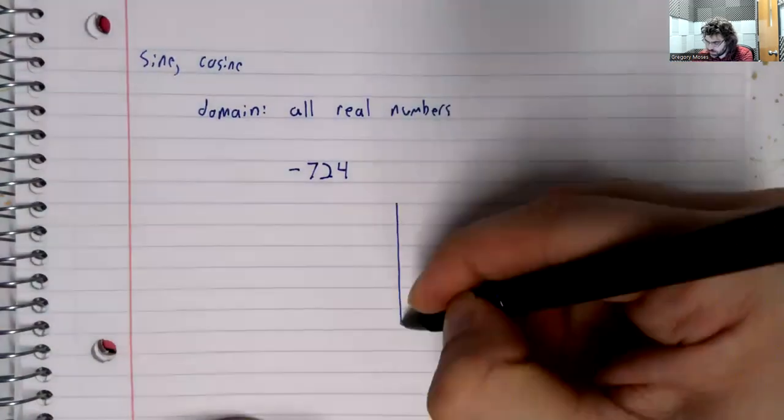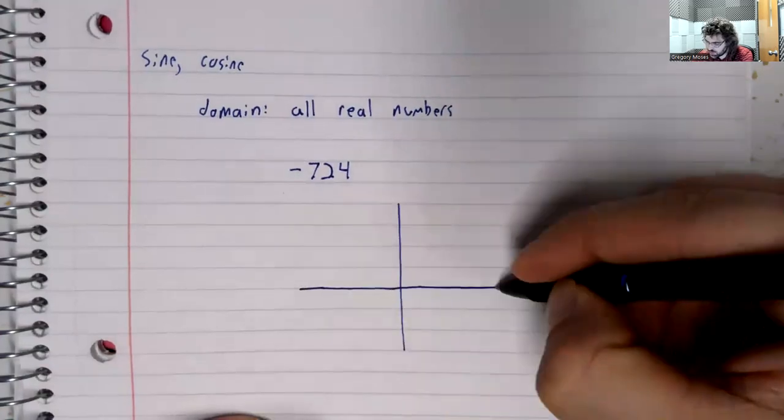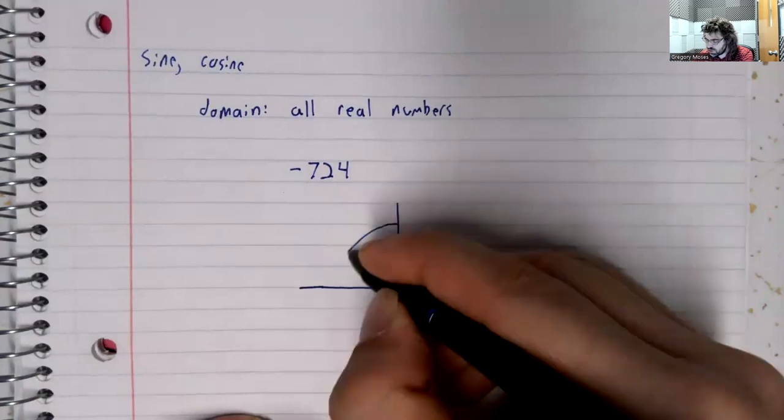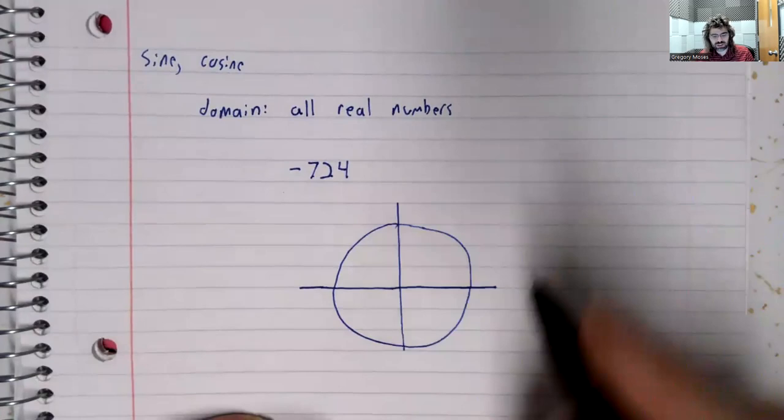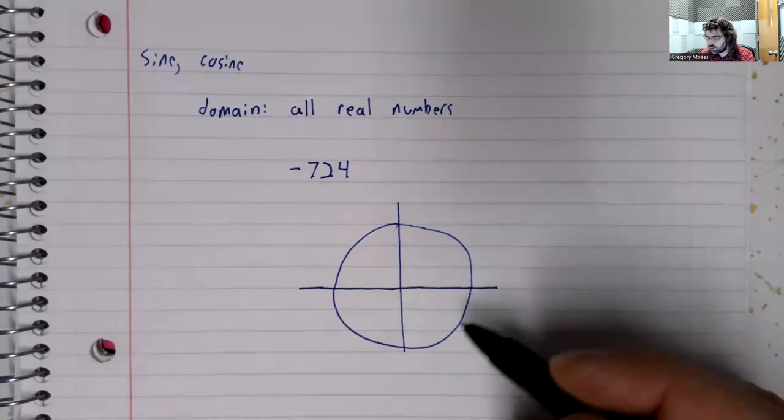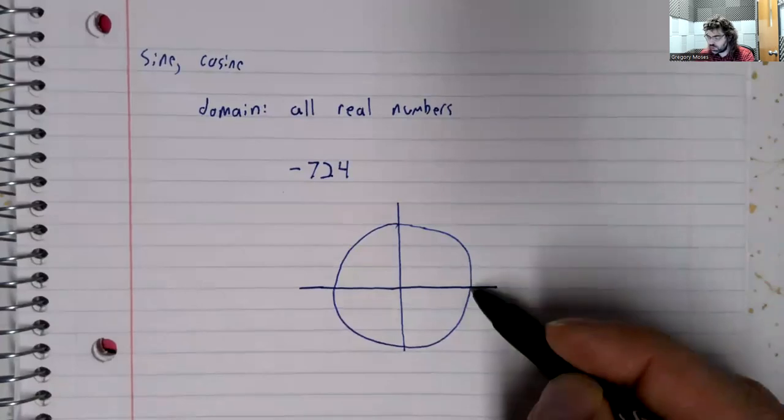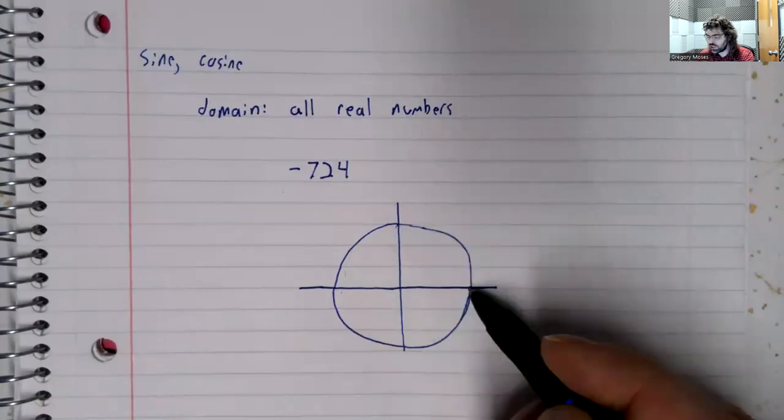We don't have a degree symbol, so that's negative 724 radians. So we go around the circle, 2 pi radians, 4 pi radians.